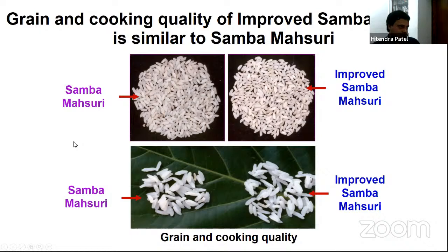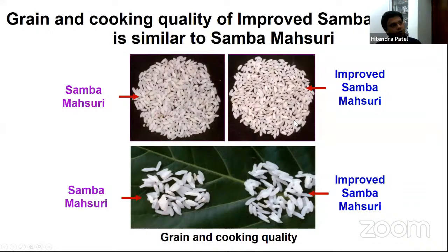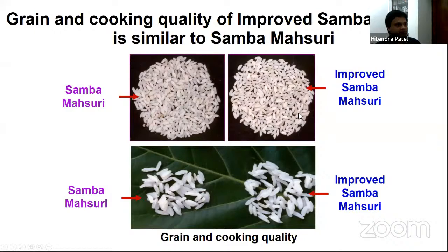The grain and cooking quality of improved Samba Masuri is similar to Samba Masuri — we did four backcrosses to maintain the quality so consumers will accept this variety. This variety is already released by the Government of India. It is not a transgenic crop. It is becoming very popular and helping farmers because they don't need chemicals to control bacterial leaf blight. Improved Samba Masuri is also a low glycemic index rice, making it diabetic-friendly, and we are popularizing it to different states in India and have licensed it to a company.